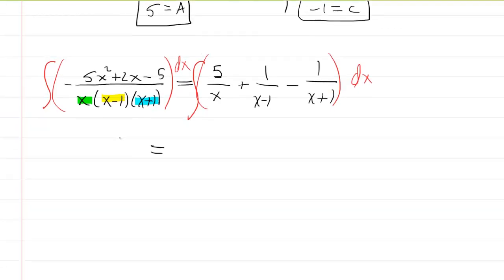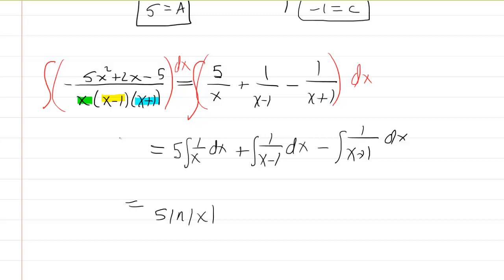Now we perhaps can evaluate each one independently. So the first one is going to be 5 times the integral of 1 over x dx. The second one is going to be the integral of 1 over x minus 1 dx. And then the third one is minus the integral of 1 over x plus 1 dx. These are pretty easy. The first one becomes 5 ln absolute value of x. The second one becomes ln absolute value of x minus 1. And then minus ln absolute value of x plus 1. And then don't forget your constant of integration. And this would be your answer right here.